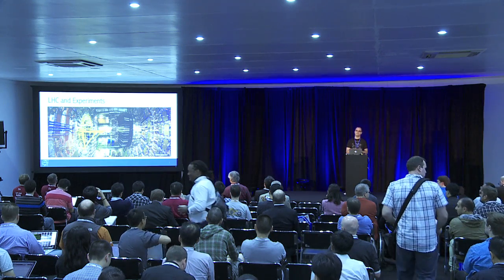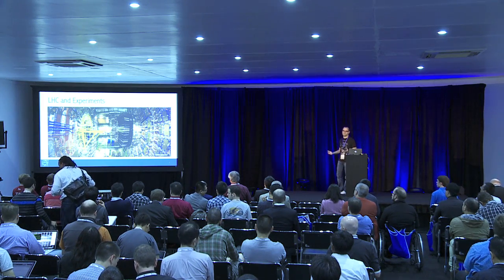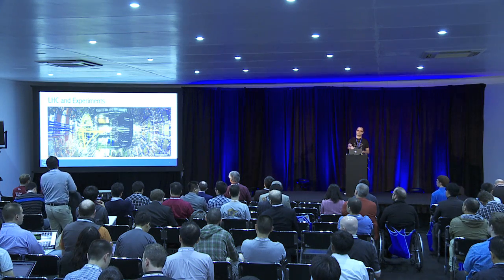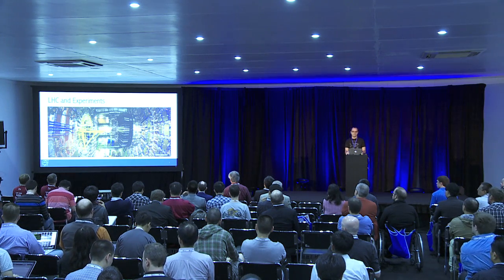The detectors of the experiments are located in huge underground caverns. This picture shows the CMS detector — you can feel the size of these machines. They have the size of cathedrals: up to 45 meters long, 25 meters in diameter, more than 12,000 tons. As a comparison, imagine a machine with the mass of the Eiffel Tower built 100 meters underground.